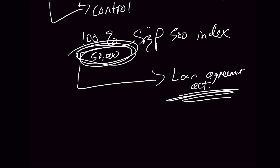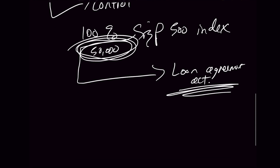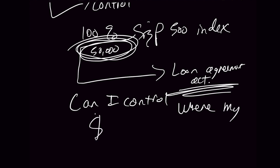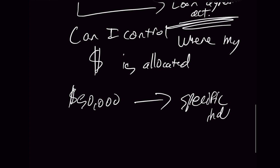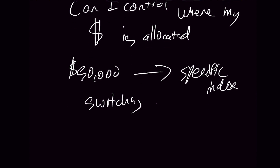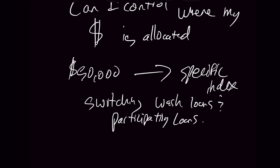Good loan provisions are going to allow you flexibility on where you are invested. The question you need to ask is: can I control where my money is allocated in all the different loan provisions on the policy? The second thing — and this is really cool — some companies give you the ability to take that $50,000 loan and tie it to a specific index of your choosing. Not all companies allow that. As a bonus, consider switching back and forth between wash loans and participating loans — you want to know if there's a cap on how many times you can do that, because a lot of companies will cap you.